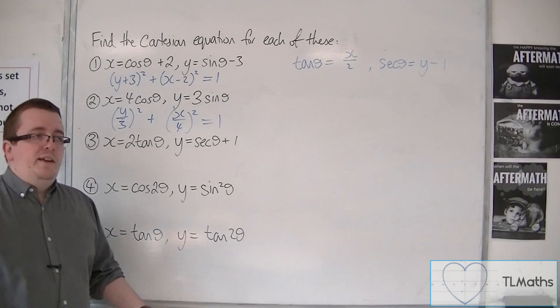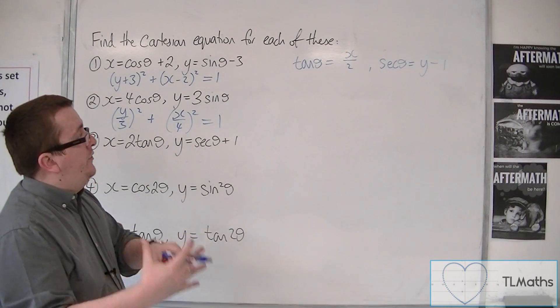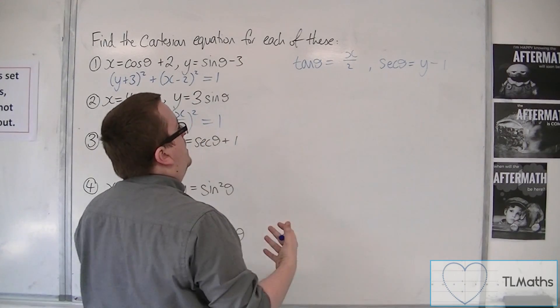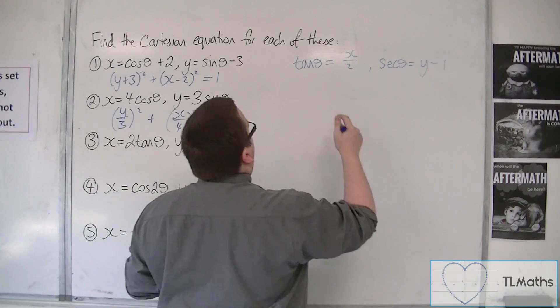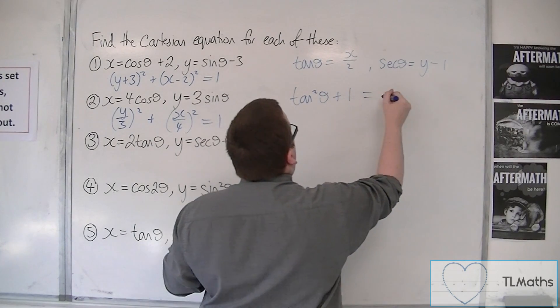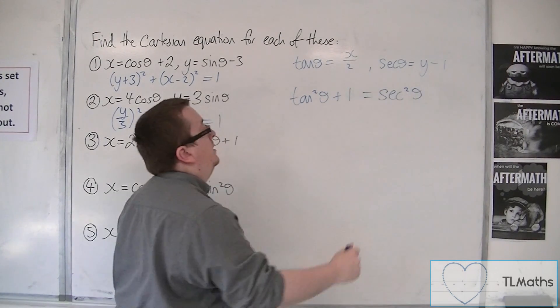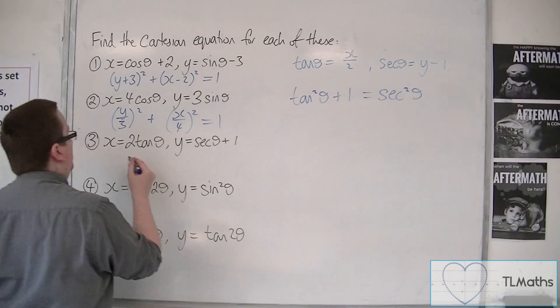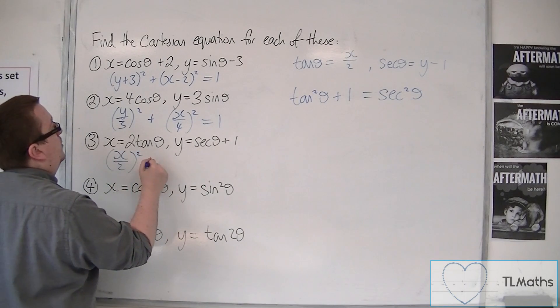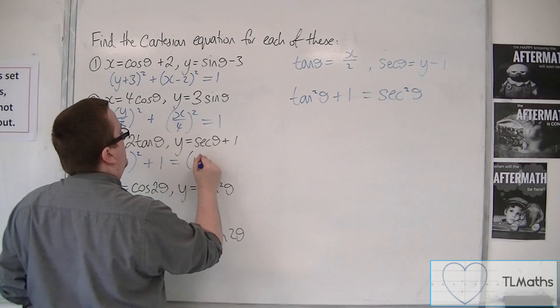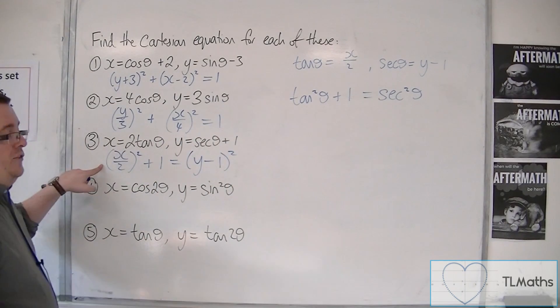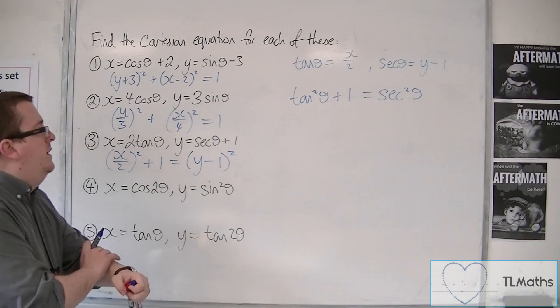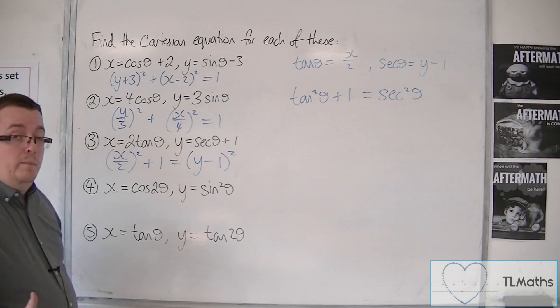Now we have a trig identity that involves both tan and sec. Going from sin squared plus cos squared equals 1, we're going to divide both sides by cos squared. So we're going to get tan squared plus 1 is equal to sec squared. So that is the identity that I use. So tan squared is x over 2 squared plus 1 is equal to sec squared, so y minus 1 squared. And that is the Cartesian equation. You might notice that I'm not expanding these out. There's not really much point in doing so, so I'm just leaving them as they are.